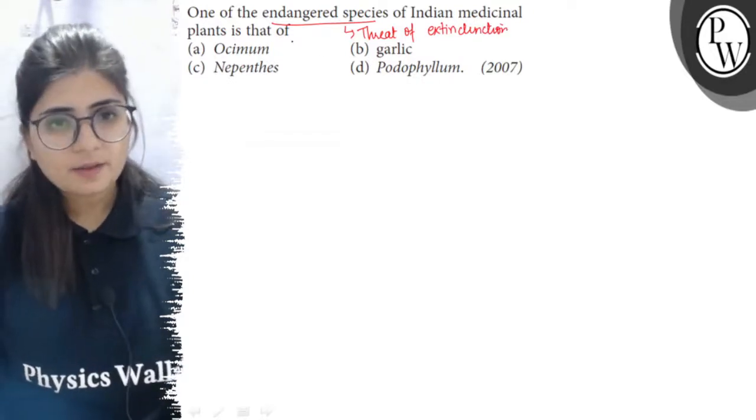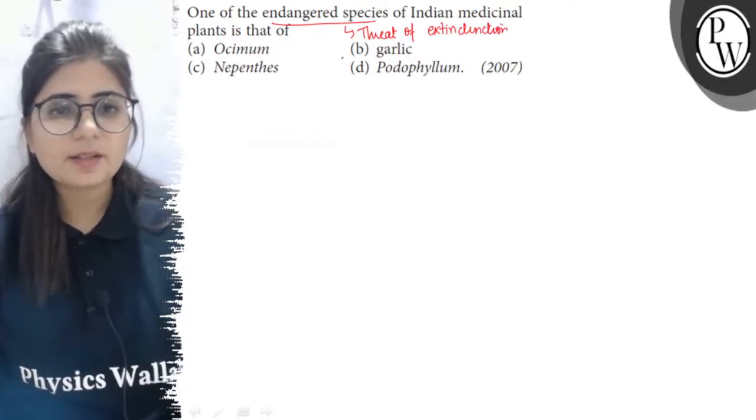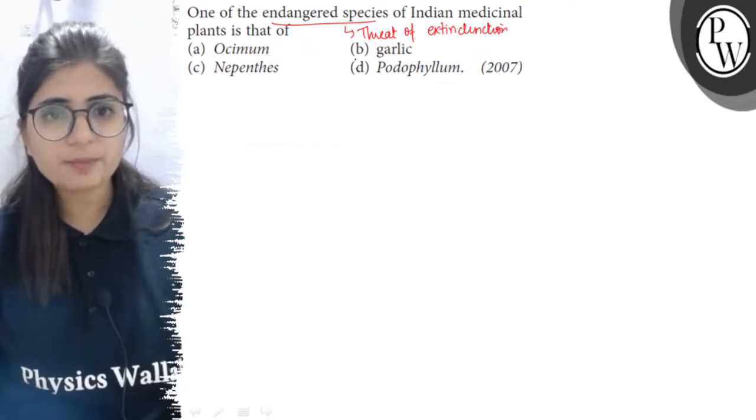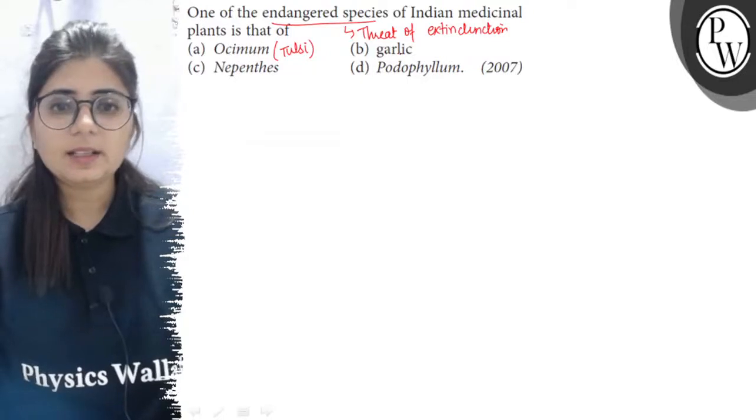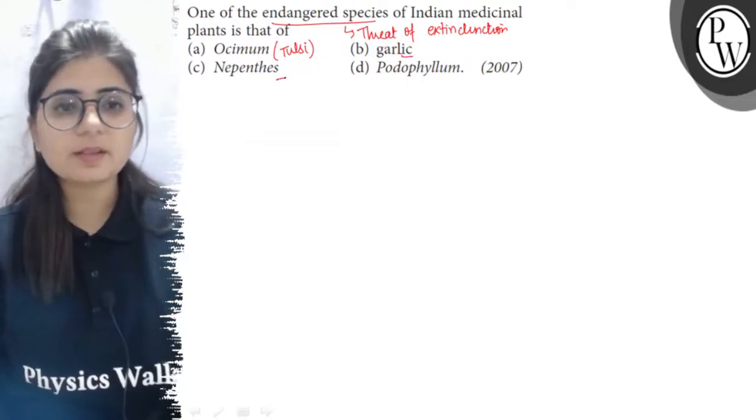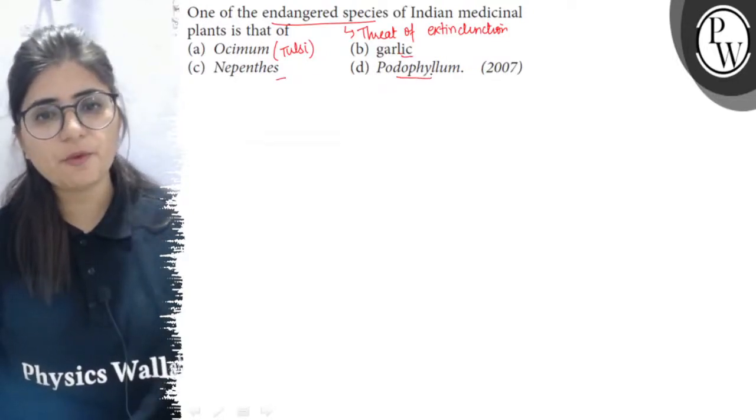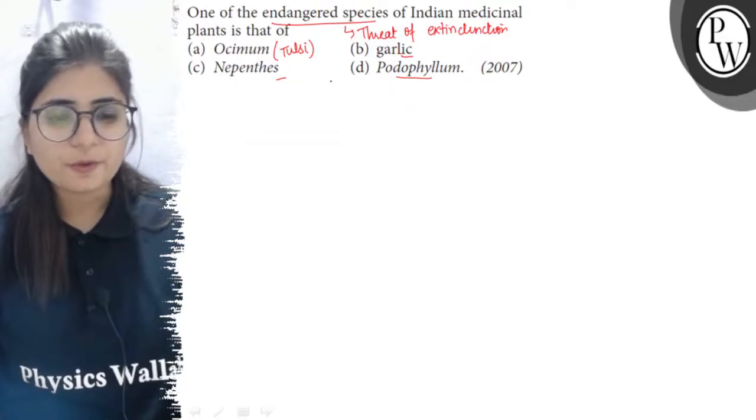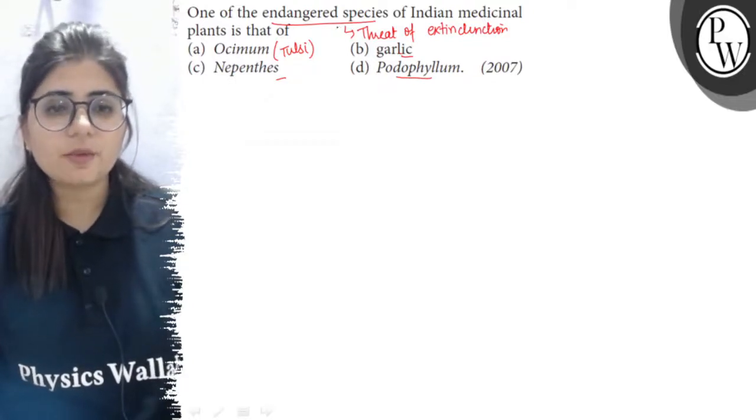Now these four are medicinal plants: Ocimum, which means Tulsi; garlic, which means Lehsun; Nepenthes is the pitcher plant; and Podophyllum. So out of these four, which is endangered?